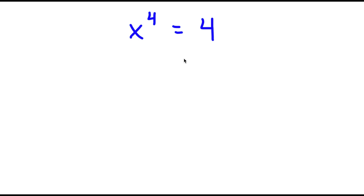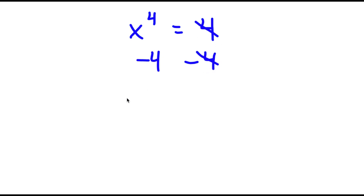In this problem, I have x to the power of 4 is equal to 4. I'm going to first start by subtracting 4 on both sides. These two cancel out, and now I have x to the power of 4 minus 4 is equal to 0.